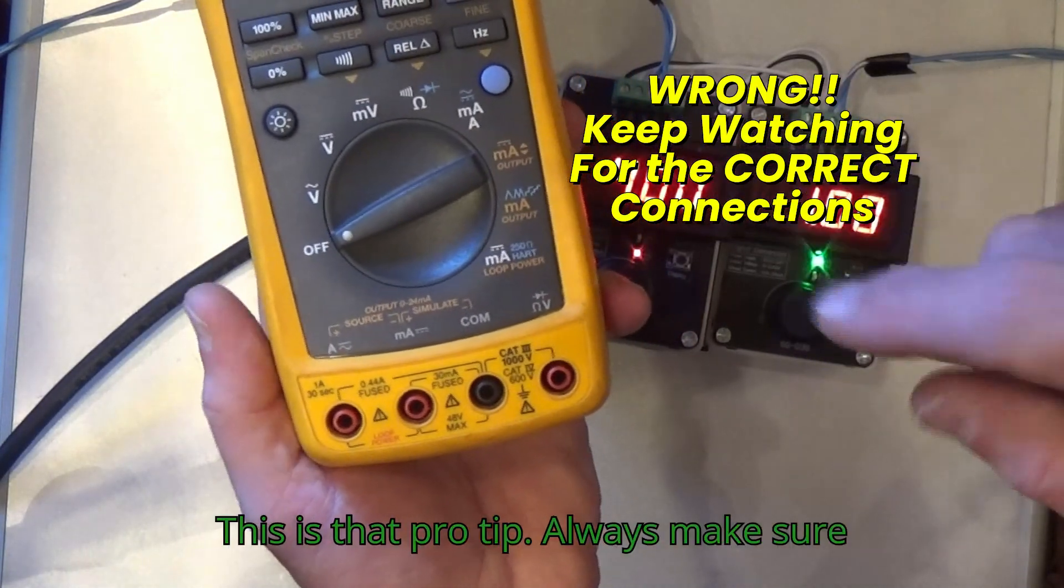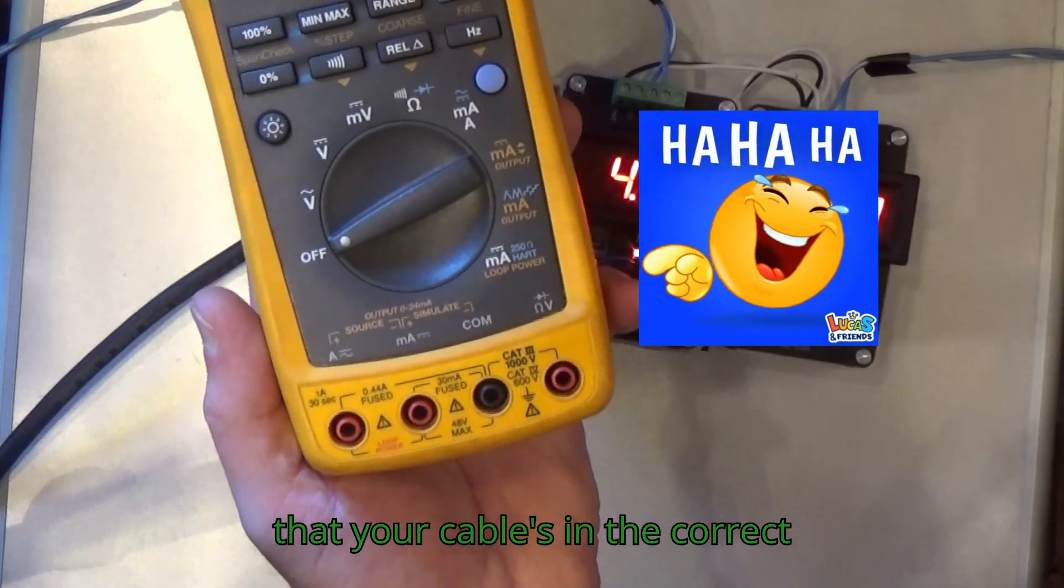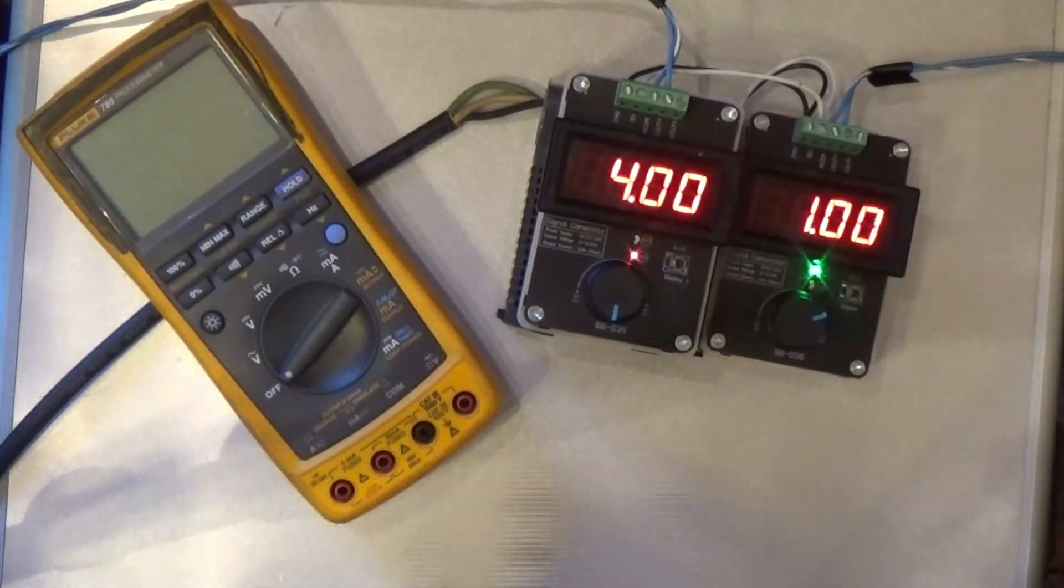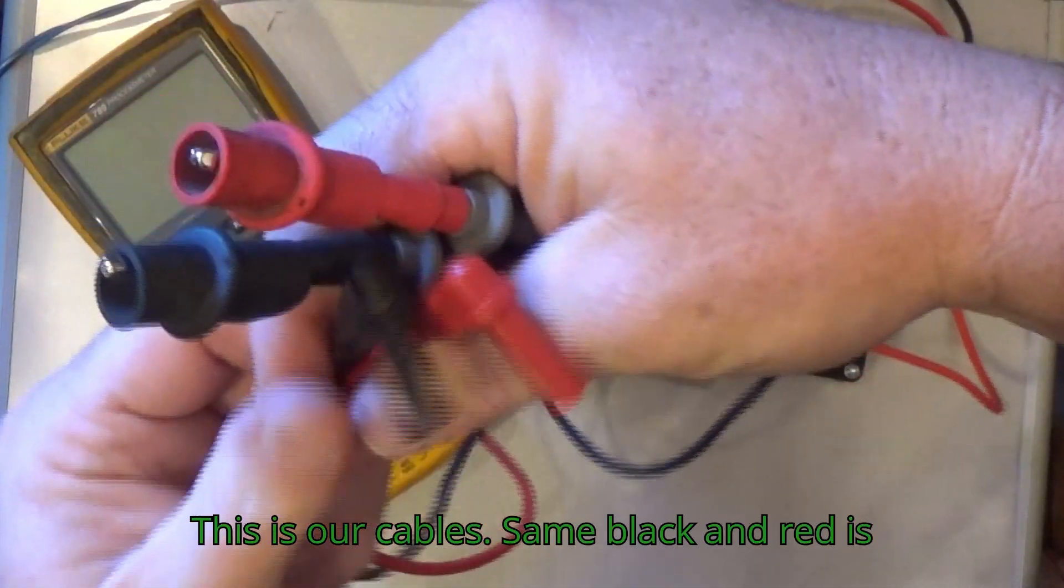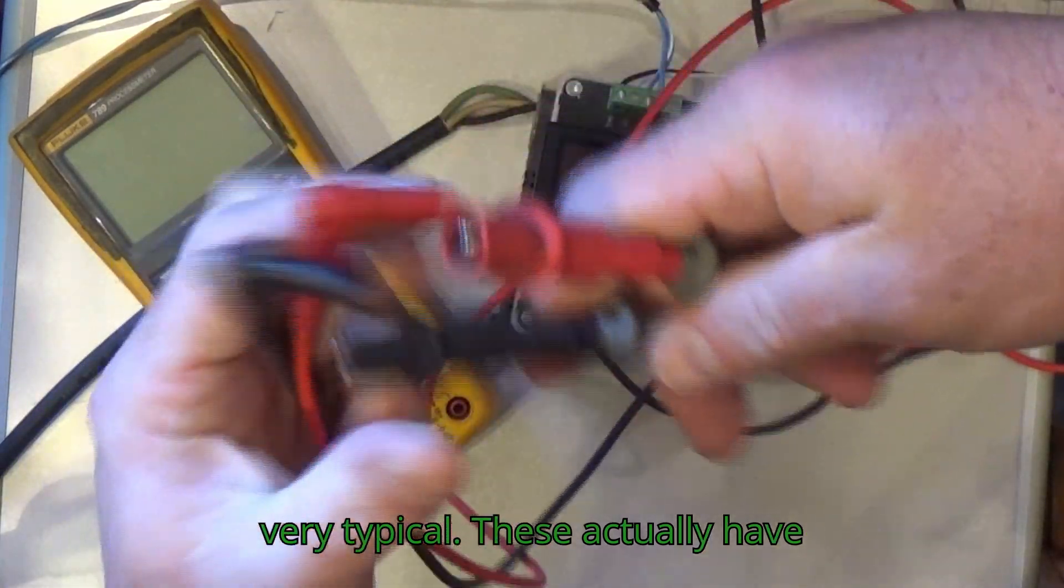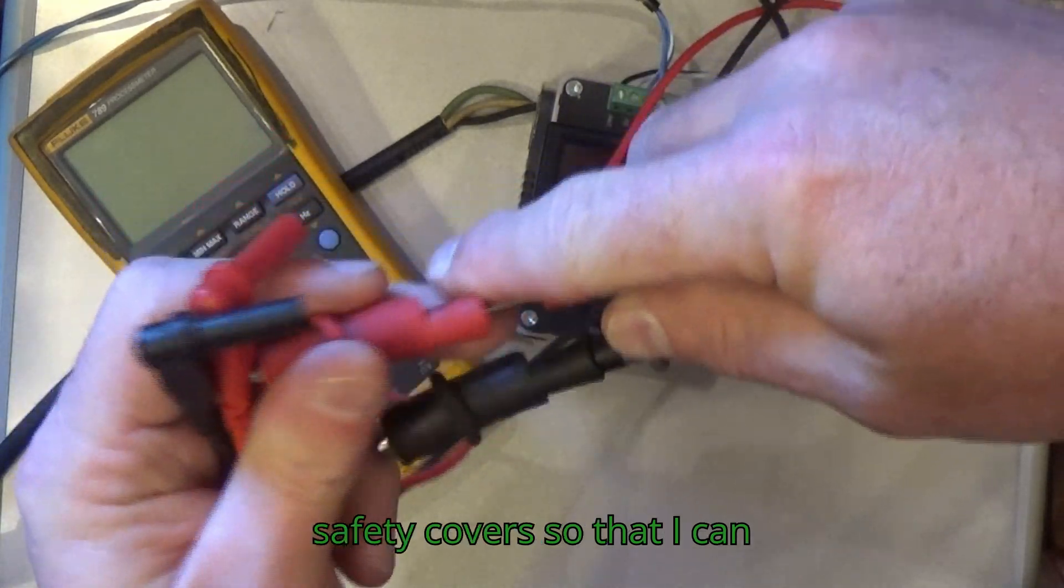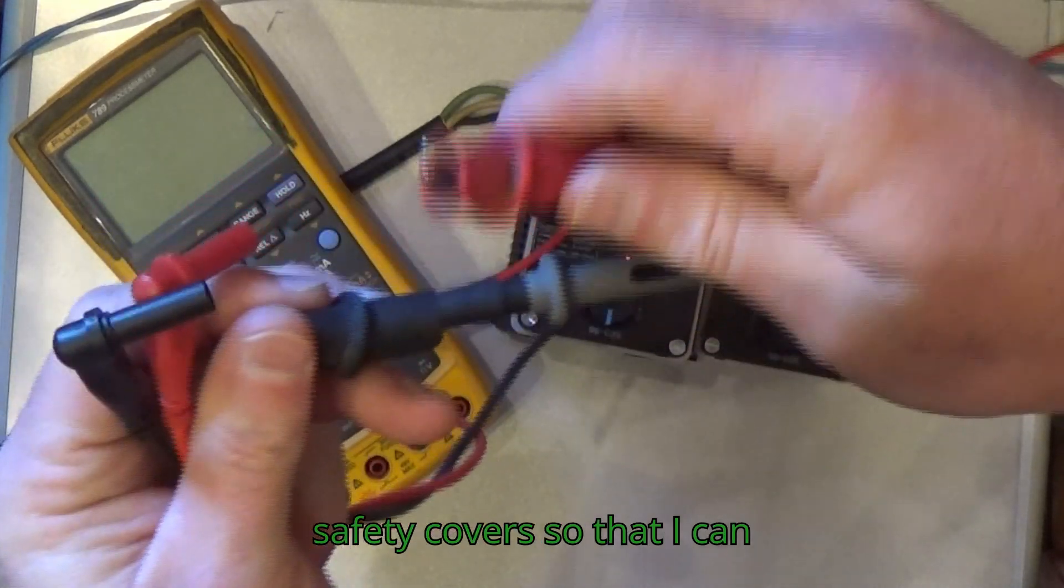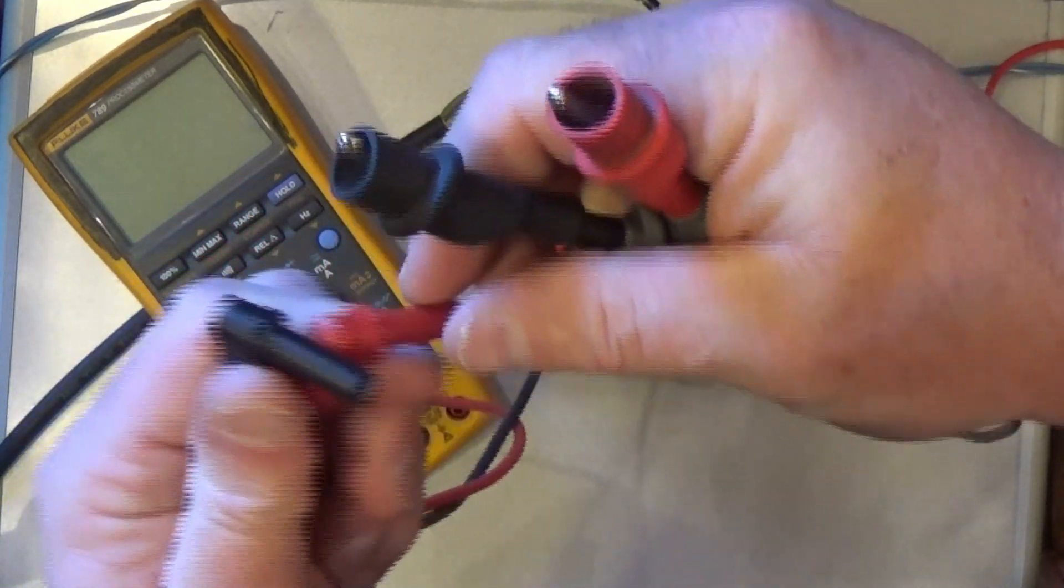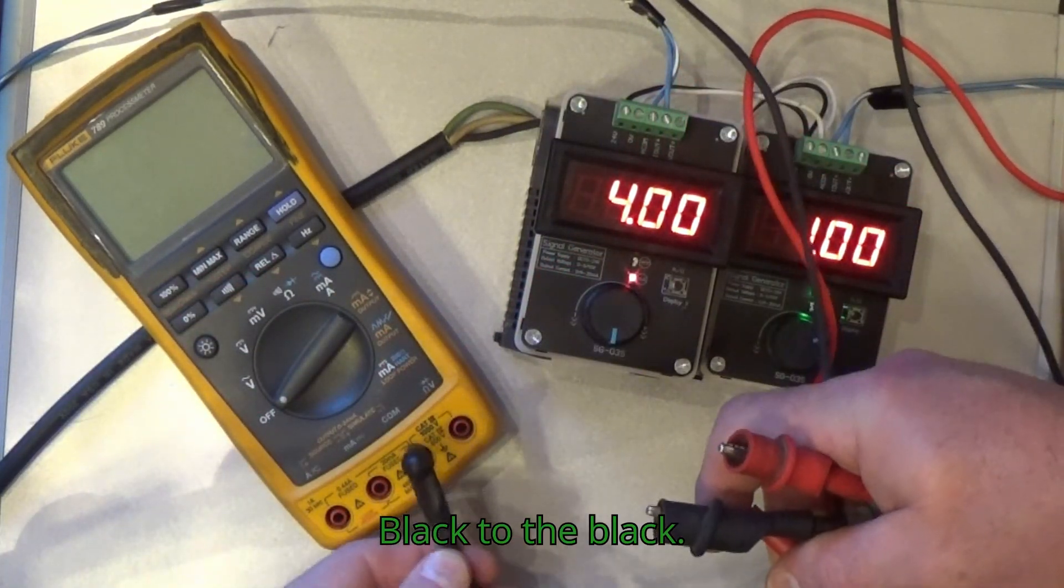This is that pro tip: always make sure that when you change these dial settings, your cable is in the correct position. You will blow fuses. These are our cables, same black and red is very typical. These actually have clamps on them instead of the little safety covers so I can clamp onto the wire and just hold it there without me holding it. So let's hook it up, black to the black.